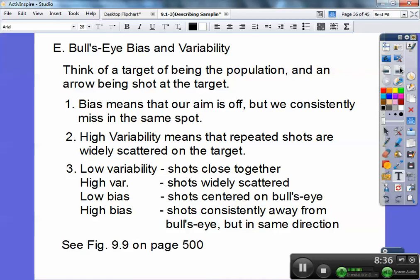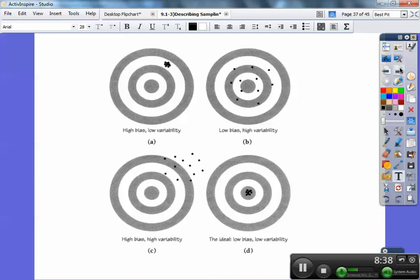Here's figure 9.9 on page 500. Here's high bias, low variability. Here's low bias, high variability. Here's the ideal basis: low bias, low variability. And this one's high bias, high variability.